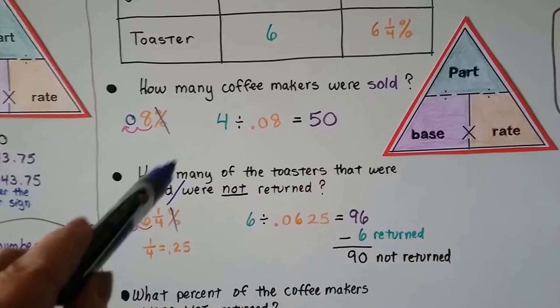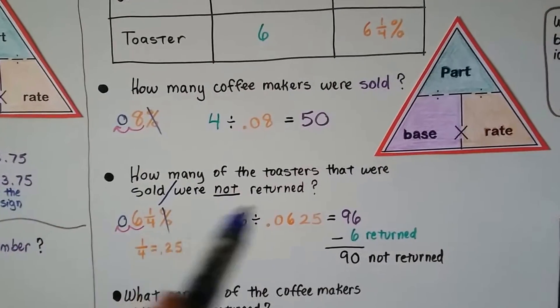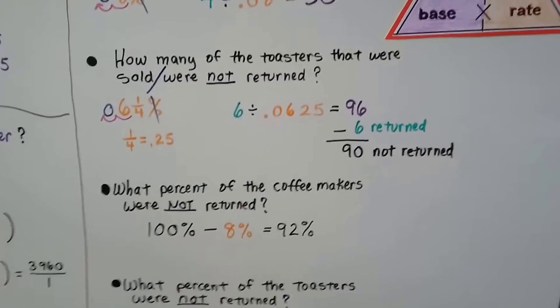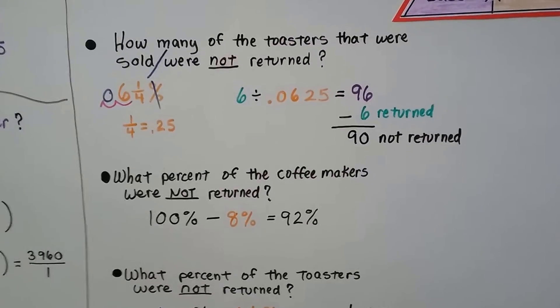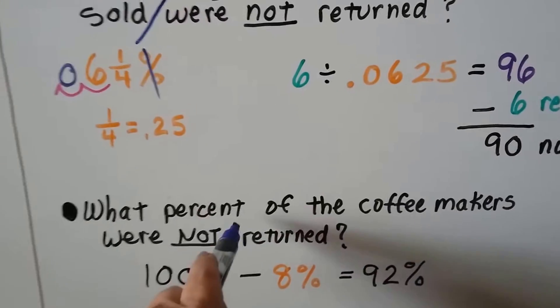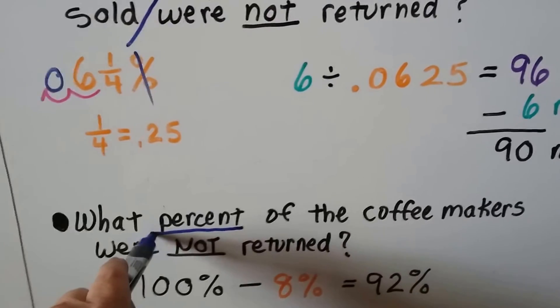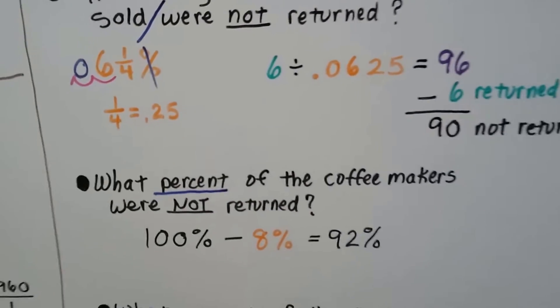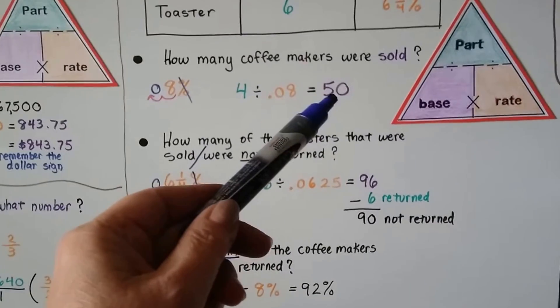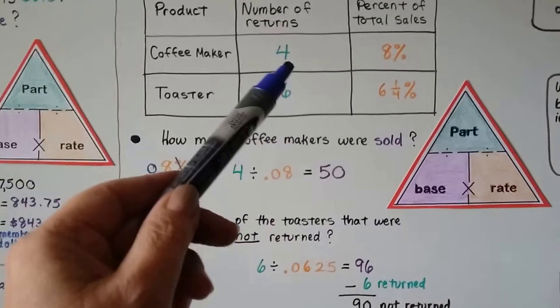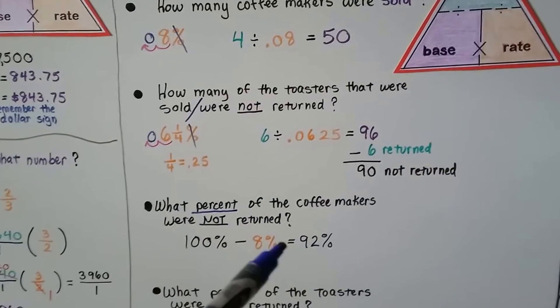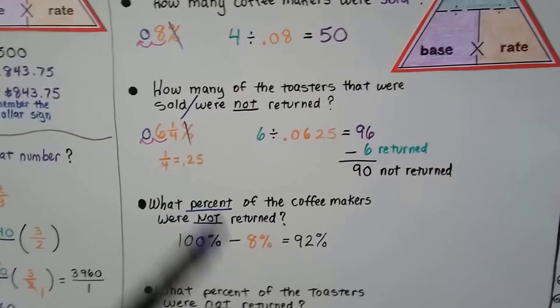So I split this so that I could do two parts of the problem. Next question says, what percent of the coffee makers were not returned? Now you have to be careful. It says what percent? We have to make sure we're answering exactly what it's asking. So we might look at this and say, well, we know there were 50 coffee makers sold and there were four returns. So there was 46 not returned. But that's not what it's asking. It's asking for a percentage.